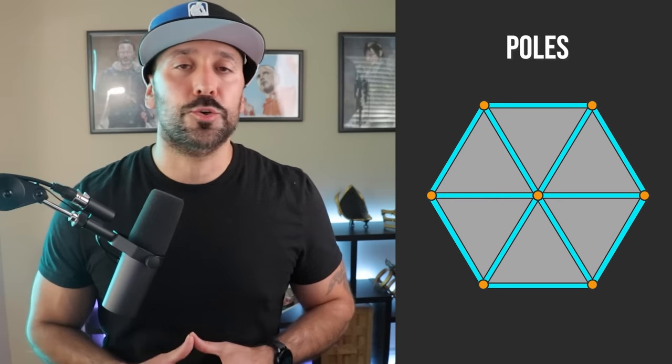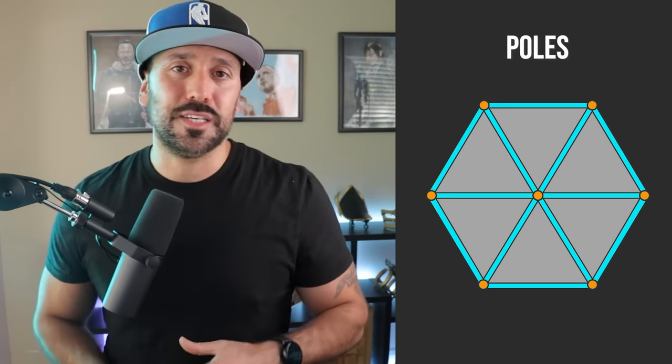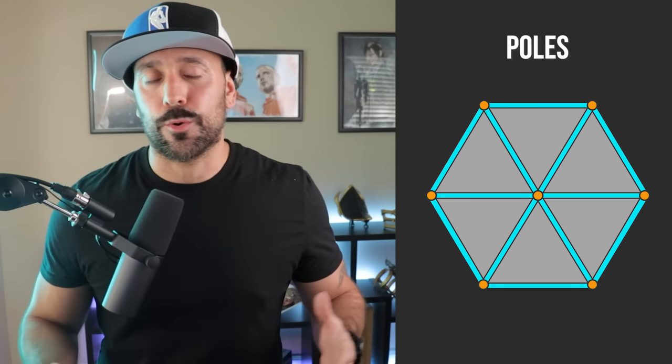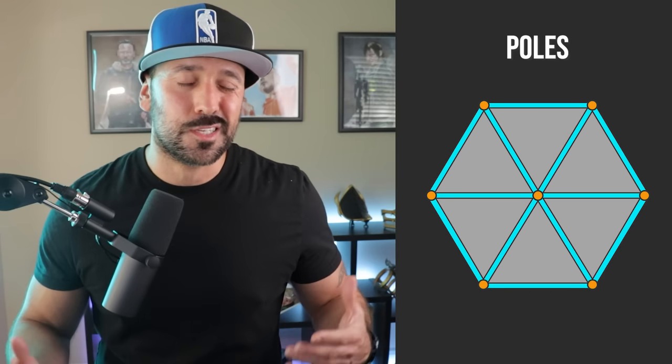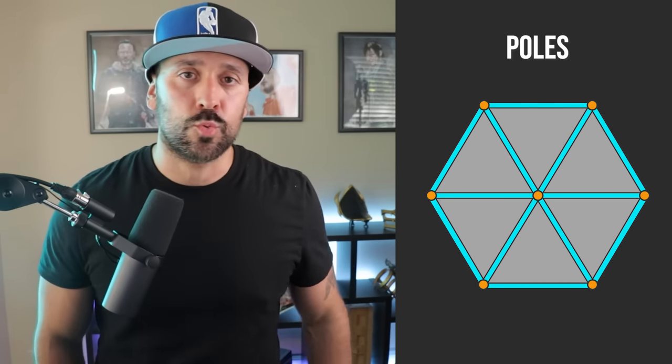Now let's take a look at the villains within the world of topology. The first one is poles — essentially a junction of a vert that contains more than four edges. So anything more than four — five, six, seven, eight — is considered a pole. Depending on where you place this, it can be more or less problematic. Poles on flat areas are not an issue, even in sub-D models. However, on curved surfaces you really have to be careful with poles, as they can often lead to undesirable results.